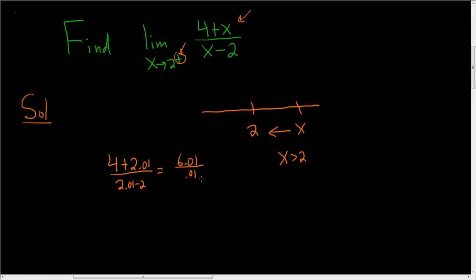So you basically have a number in the numerator that's positive, always divided by a super small number.